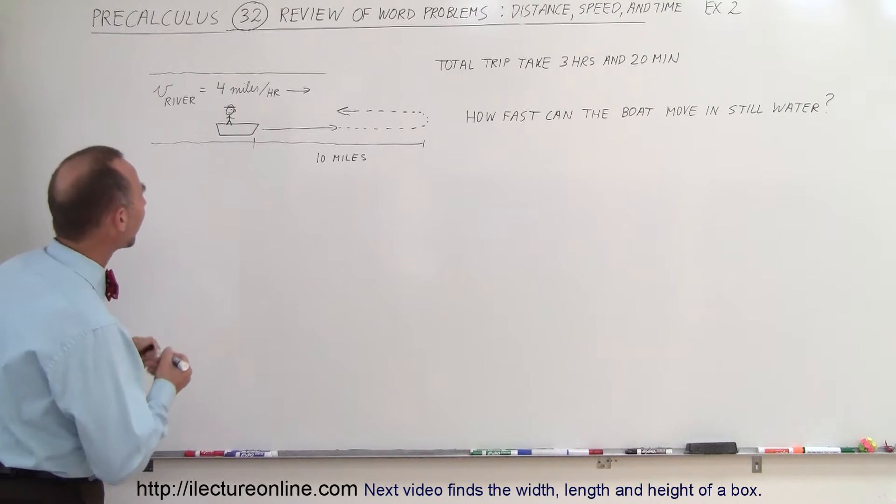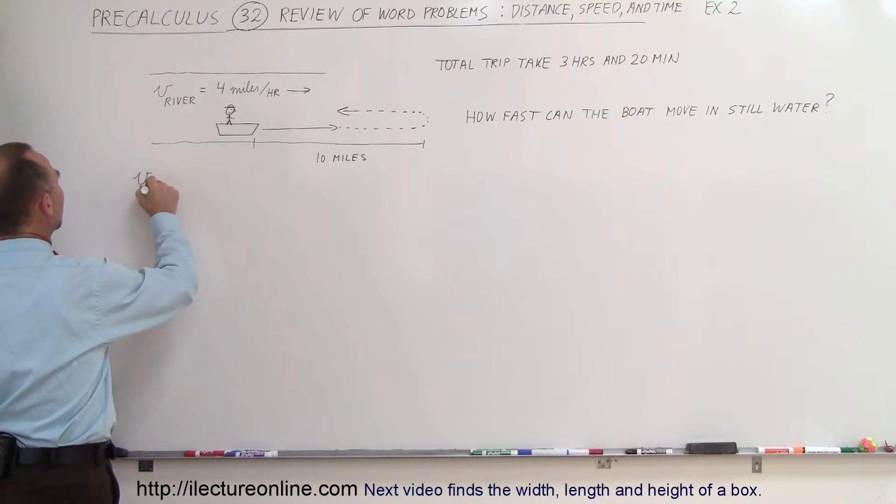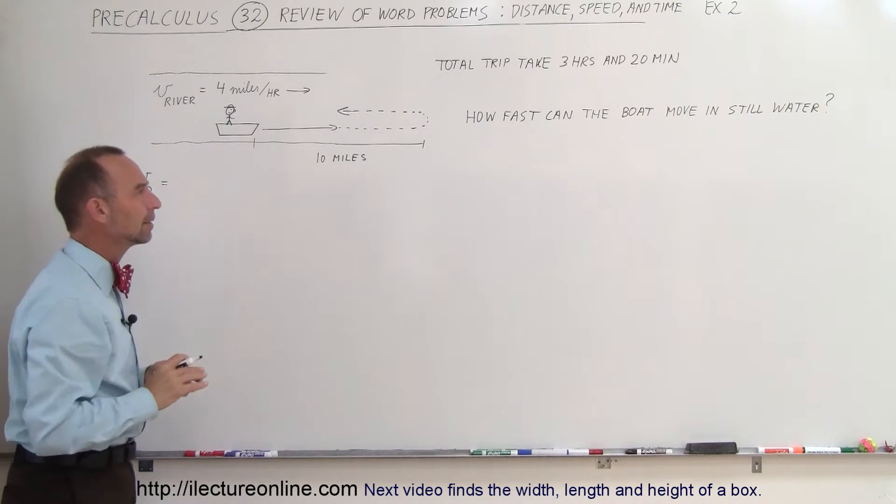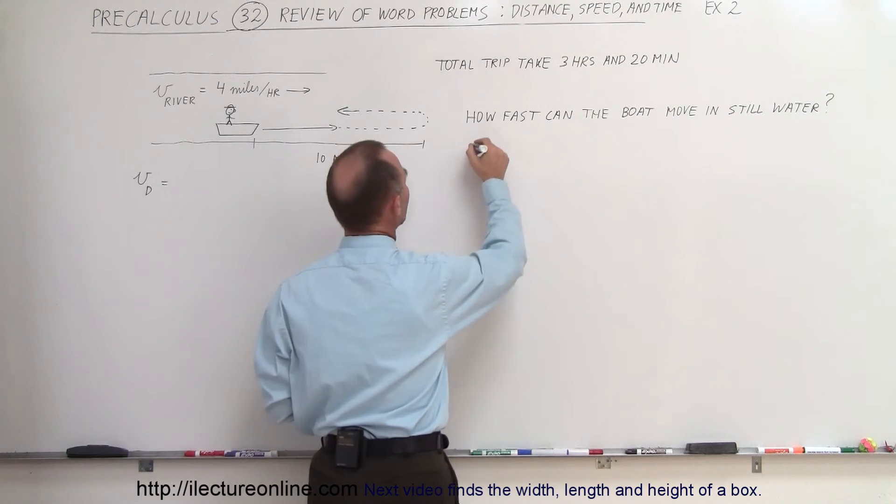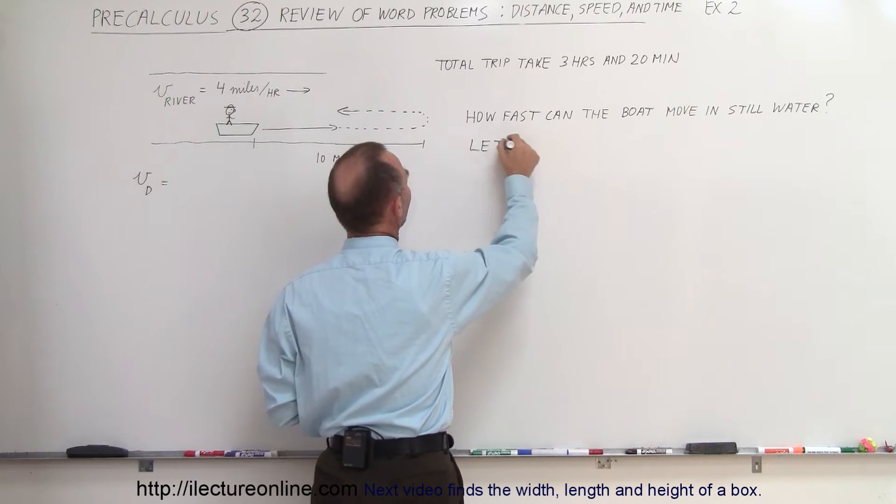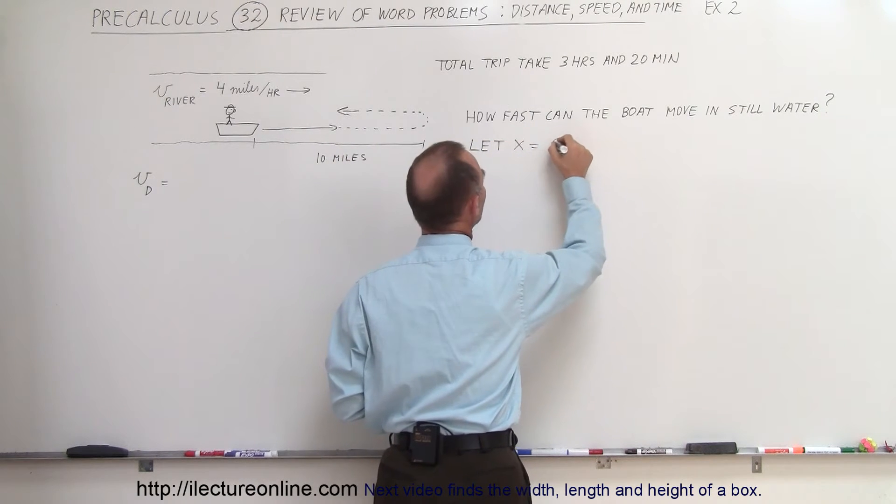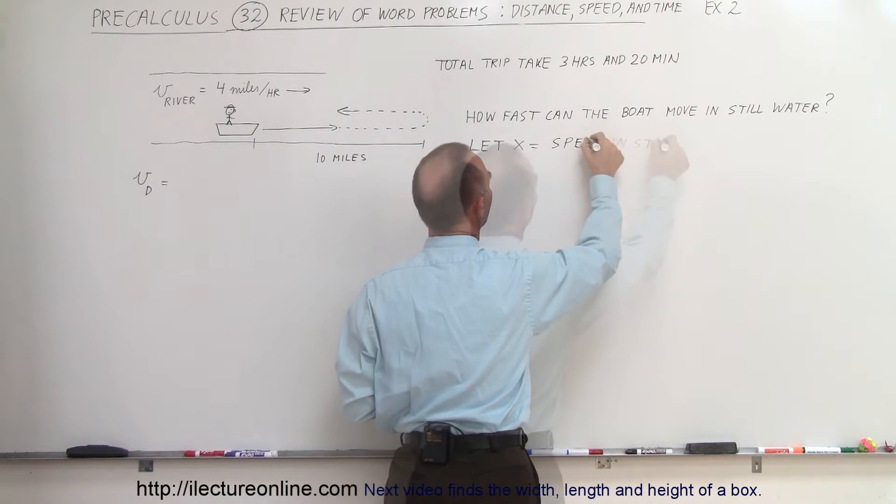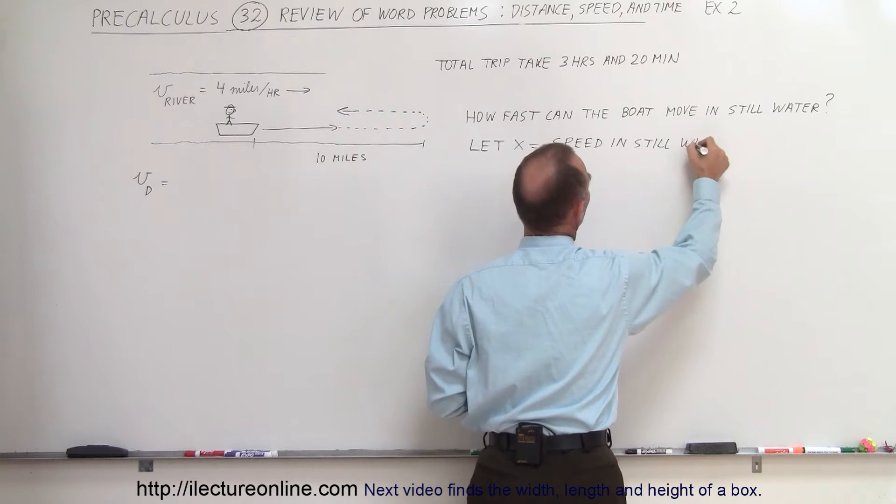Well, first of all, let's define the velocity of the boat downstream. Before we do that, maybe what we need to do here is say, let x equal the speed in still water. And that's then what we're looking for.